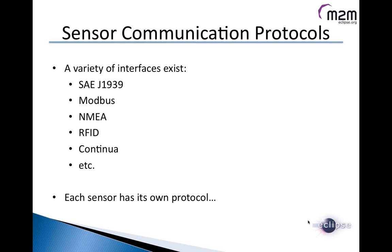There are many sensor communication protocols. In order to acquire data from sensors, we have to adapt to their language. In the field we find protocols like SEE, J1939 — very popular in the automotive market for vehicle diagnostic applications — Modbus, very popular in industrial environments, NMEA used for acquiring geographical information from GPS, and also RFID and Continua as examples of different protocols found in the field. The conclusion is that each sensor has its own protocol, and to acquire information from the field we need to be capable of speaking the sensor's language.